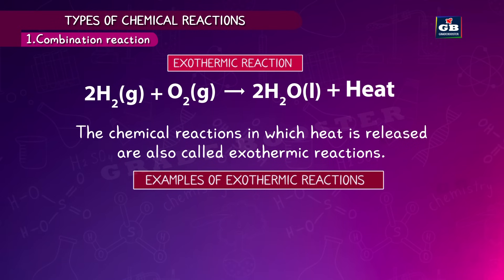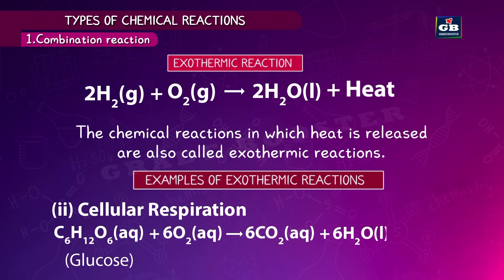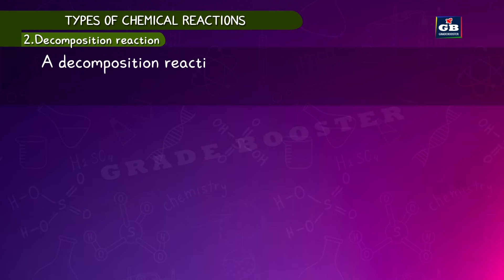Chemical reactions in which heat is released are called exothermic reactions. Examples include burning of natural gas: CH₄ + 2O₂ → CO₂ + 2H₂O. Another example is cellular respiration, where glucose reacts with oxygen to give carbon dioxide, water, and energy — heat is released in this reaction too.